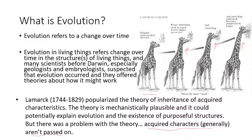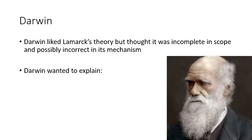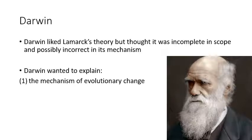Darwin liked Lamarck's theory but thought it was incorrect in scope, and that the mechanism — whatever changes an individual had in their lifespan being passed to offspring — was wrong. Darwin wanted to explain the actual mechanism causing evolutionary change. He also wanted to know why purposeful structures existed, like the eyeball — a structure designed to see in a certain way. And he was interested in the origin of species: how species came to evolve out of other species.